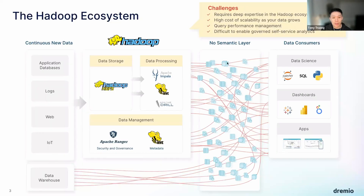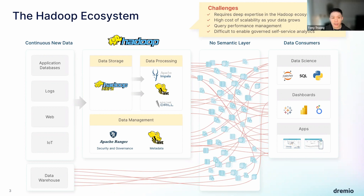The Hadoop ecosystem has a lot of pain points. Within Hadoop we have data storage, data processing, and management — under storage there's HDFS, data processing includes Impala, Hive, and Drill, and under data management we have Apache Ranger, with Hive handling security, governance, and metadata.